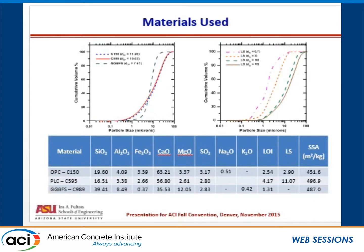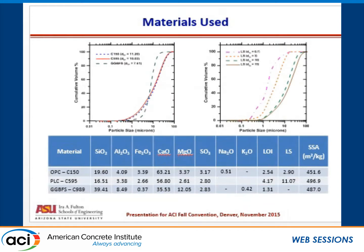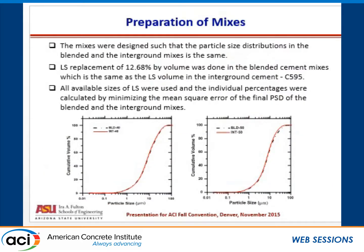For the interground cement, we use C595, which has a D50 of 10.03 microns. C150 has a D50 of 11.2 microns. We use four different limestones with different particle sizes to create the blended composition. In all, we had three different replacement levels: 20%, 40%, and 50% overall replacement levels.